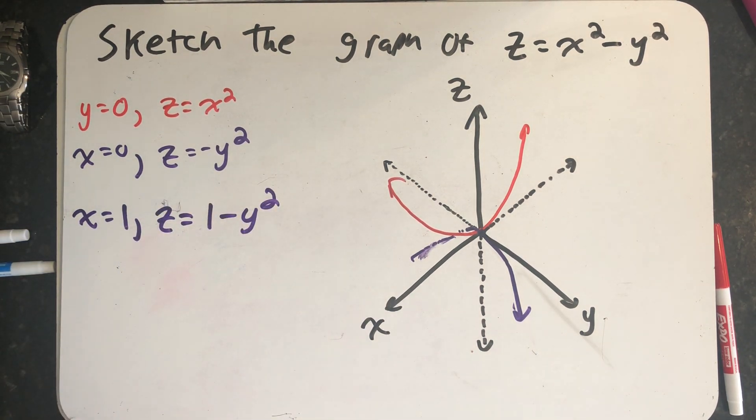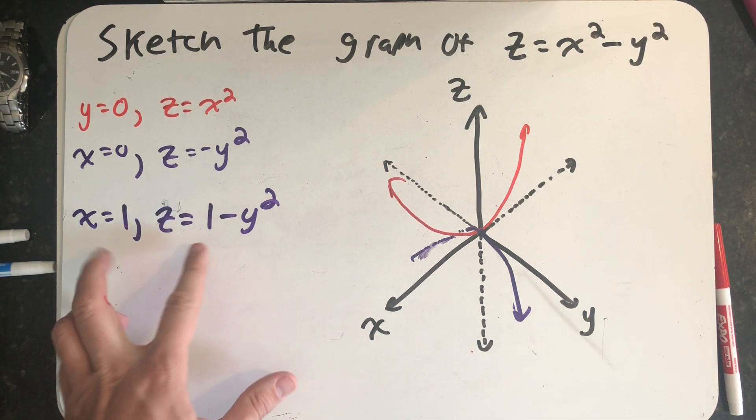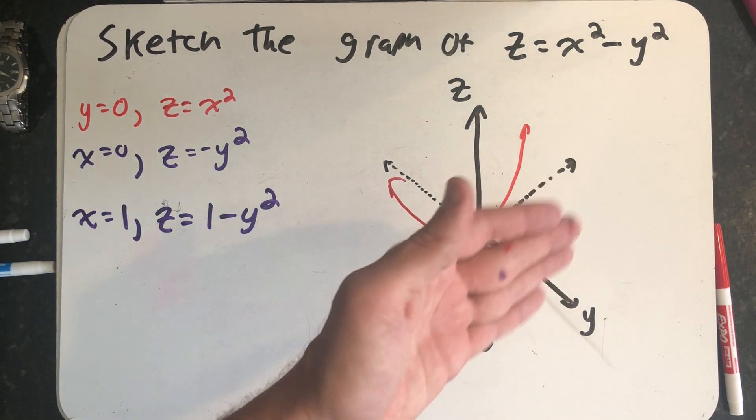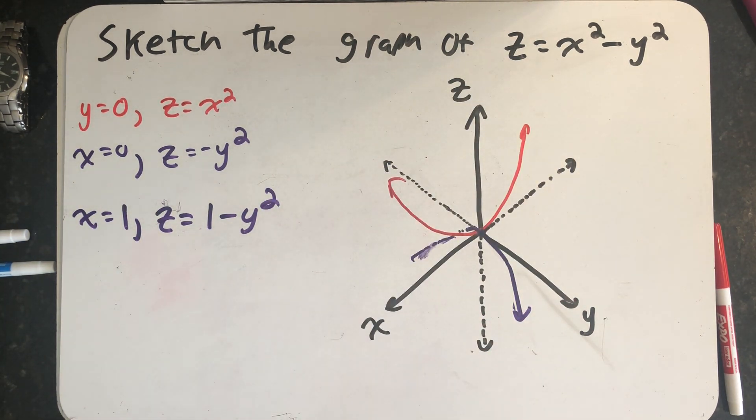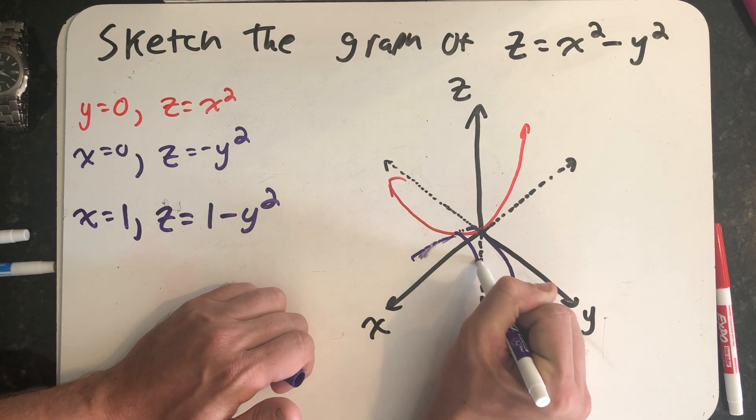We get z equals one minus y squared. I get that same parabola shifted up one unit, but not in the yz plane anymore. We're parallel to the yz plane at x equals one. So x equals one is a plane that will come through here, and I draw a parabola that looks pretty much like that one, just one unit higher.